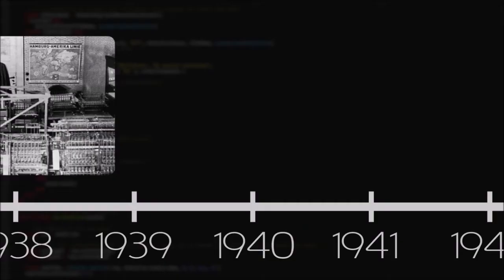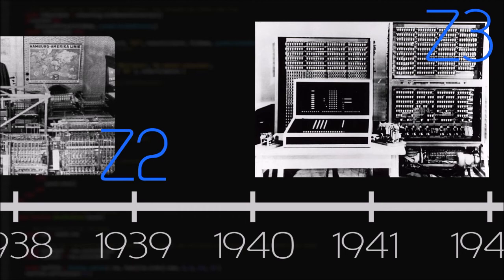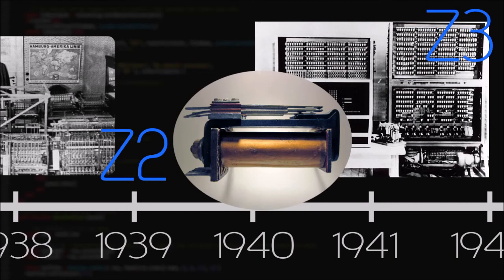Zuse's next two iterations, the Z2 and Z3, completed in 1939 and 1941, replaced the mechanical processor and memory with more efficient electromechanical relays salvaged from old telephones.